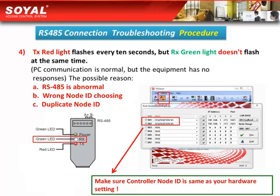Fourth, check whether the TX red light flashes every 10 seconds. If the TX red light flashes every 10 seconds but the Rx green light does not flash at the same time, it means the PC communication is normal but the equipment has no response. The possible reasons are: first, the RS485 cable is abnormal; second, the wrong node ID is chosen; or third, there is a duplicate node ID.